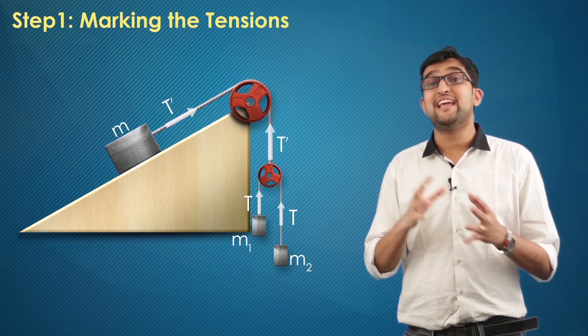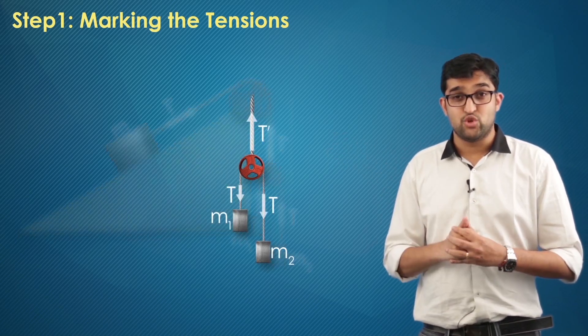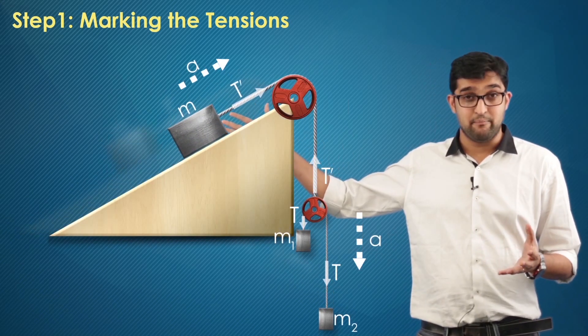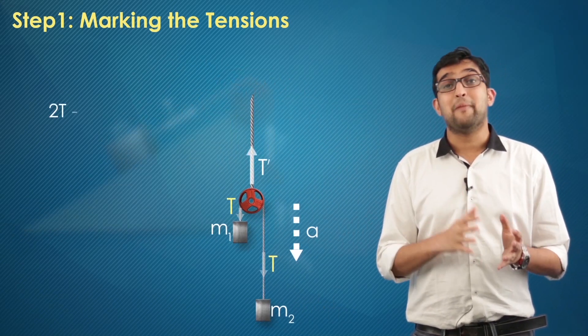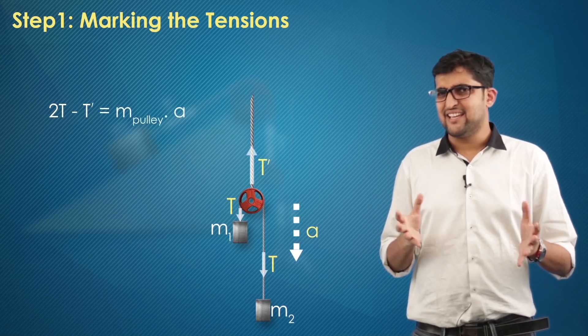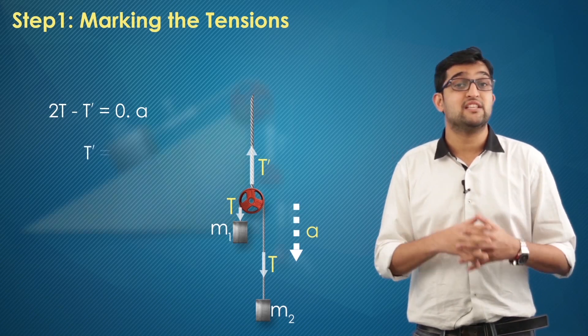For getting the relationship between T and T', I take the free body diagram of pulley 2 here. You might have guessed that pulley 2 was in the same acceleration as the body M. So I've got 2T minus T' equals mass of the pulley into acceleration a. But hey, this pulley 2 is massless. So the equation becomes T' equals 2T.